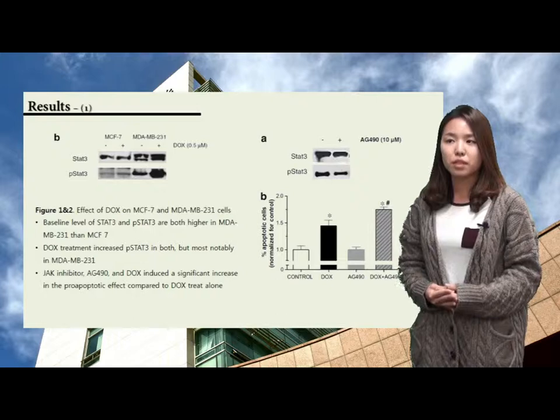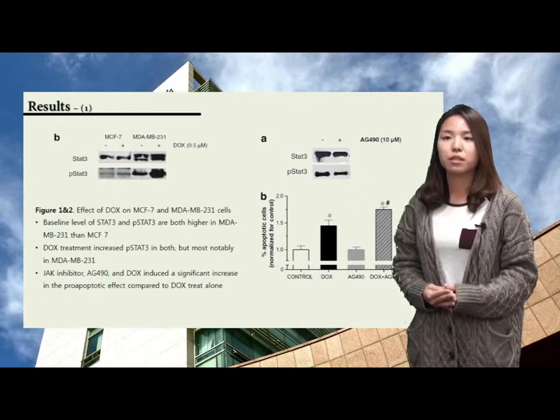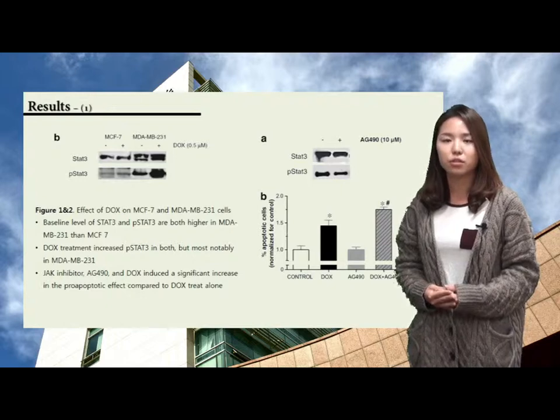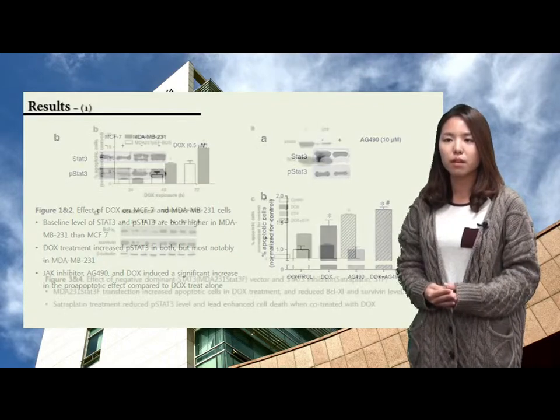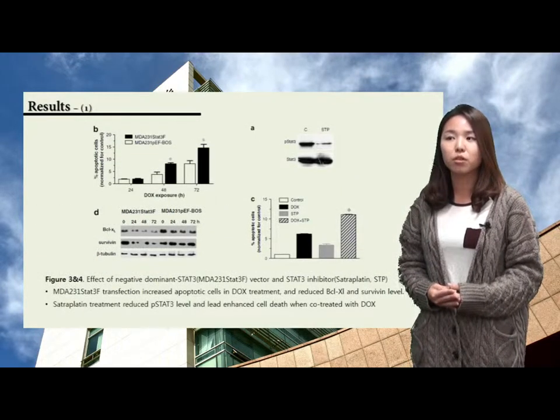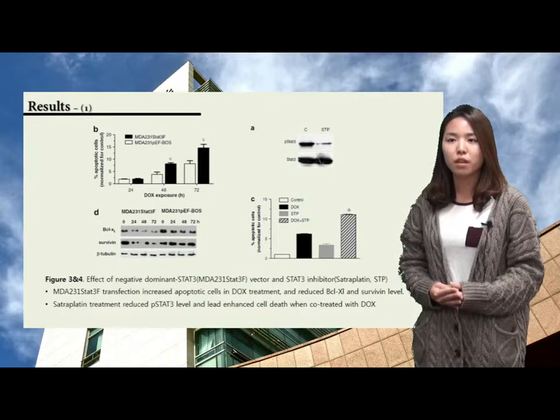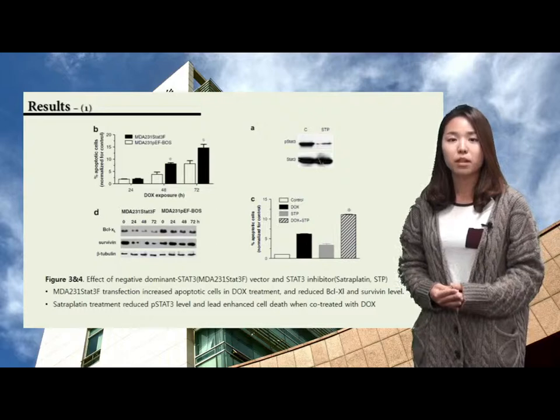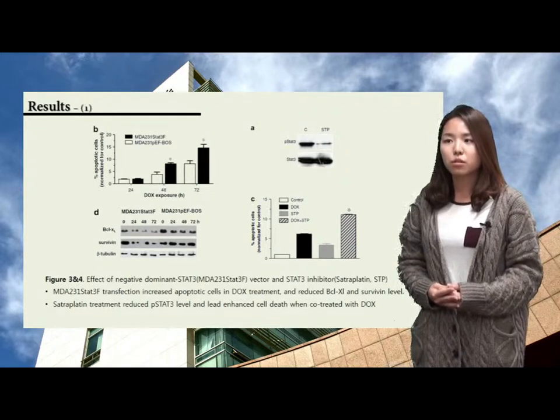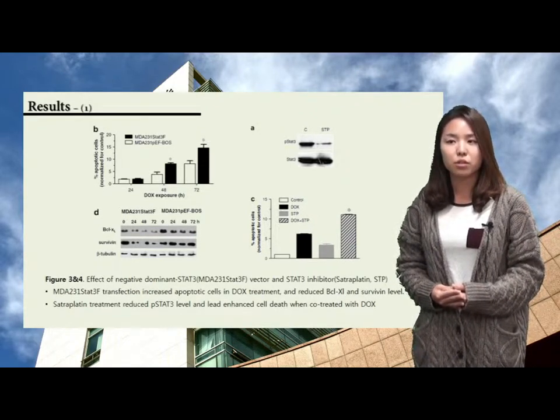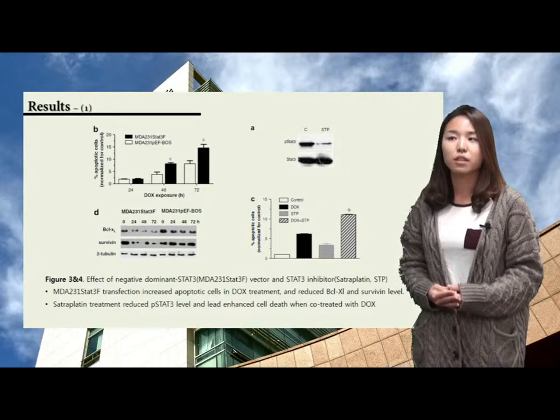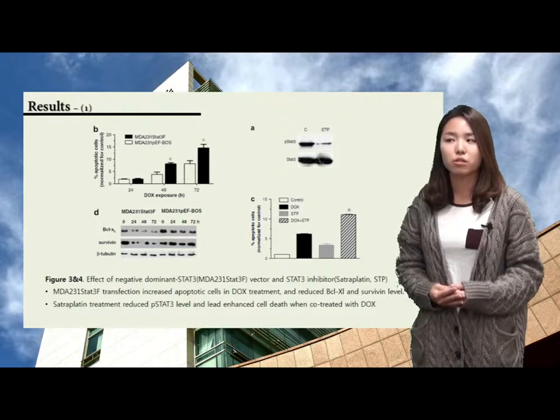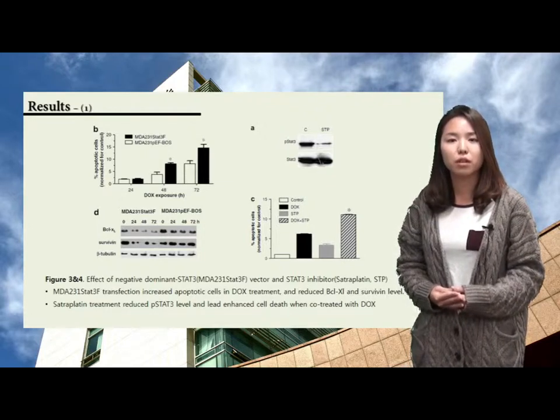Moreover, doxorubicin and JAK inhibitor co-treatment significantly increased apoptotic cell deaths compared to control. They also made negative dominant STAT3 vector. When the negative dominant STAT3 vector was transfected to MDA-MB-231 cells, the doxorubicin mediated cell death ratio was increased in the transfected cells. It can be indirect evidence of STAT3 as a doxorubicin-resistant related molecule.